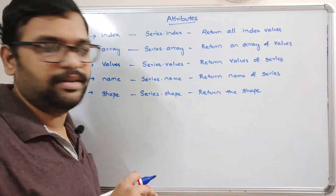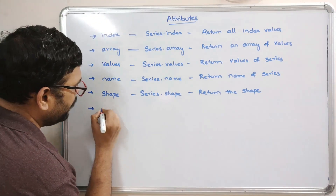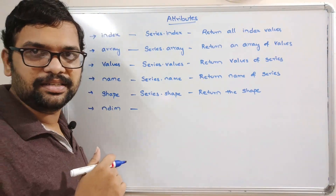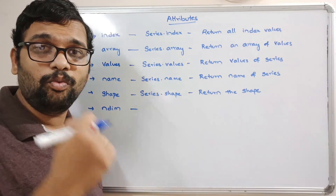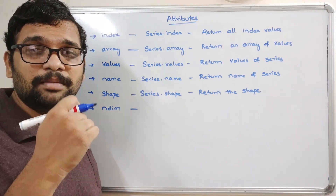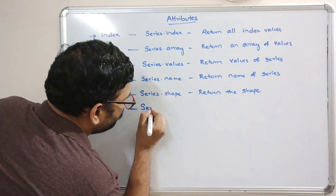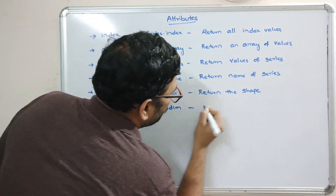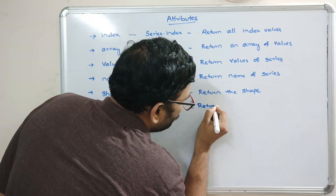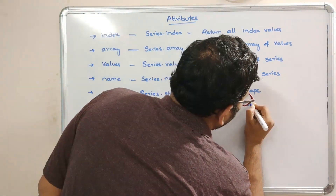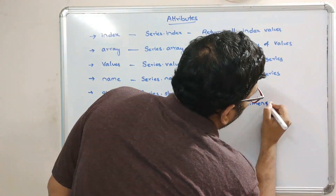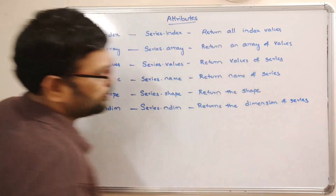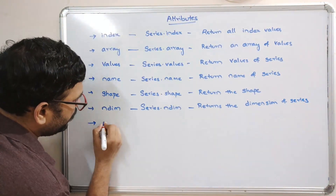There is also an ndim attribute which gives the dimension of that particular series — whether it is one-dimensional or multi-dimensional. The syntax is series.ndim and it returns the dimension of the given series.